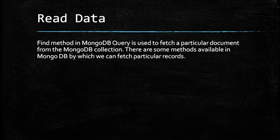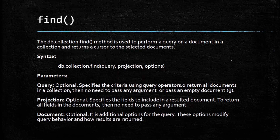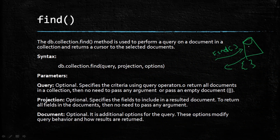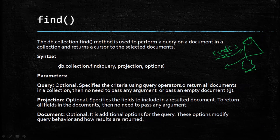The find method in MongoDB is used to fetch a particular document from a MongoDB collection. There are some methods available in MongoDB by which we can fetch a particular record. The find method is used to perform a query on documents in a collection and returns a cursor to the selected documents. When you retrieve data from the database using the find method, that data is returned to our cursor.